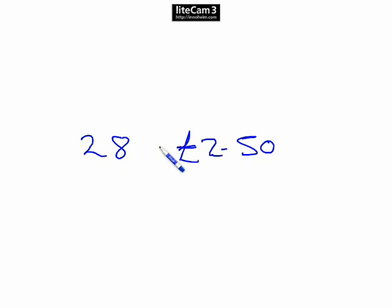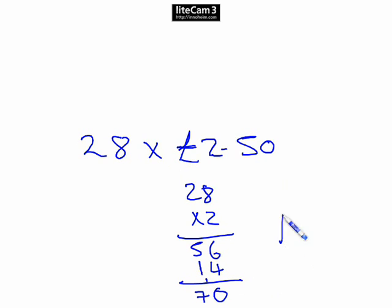OK, simple multiplication. We want 28 times £2.50. Easiest way, 28 times 2. OK, multiply it out. 16, 2 to the 4, 5 is 56. 28 times 50p. Obviously, 28 times a pound would be 28, times 50p would be half that. So, that would be 14. So, 0, 5, 6, 7, 70. So, our answer is 70 pounds.